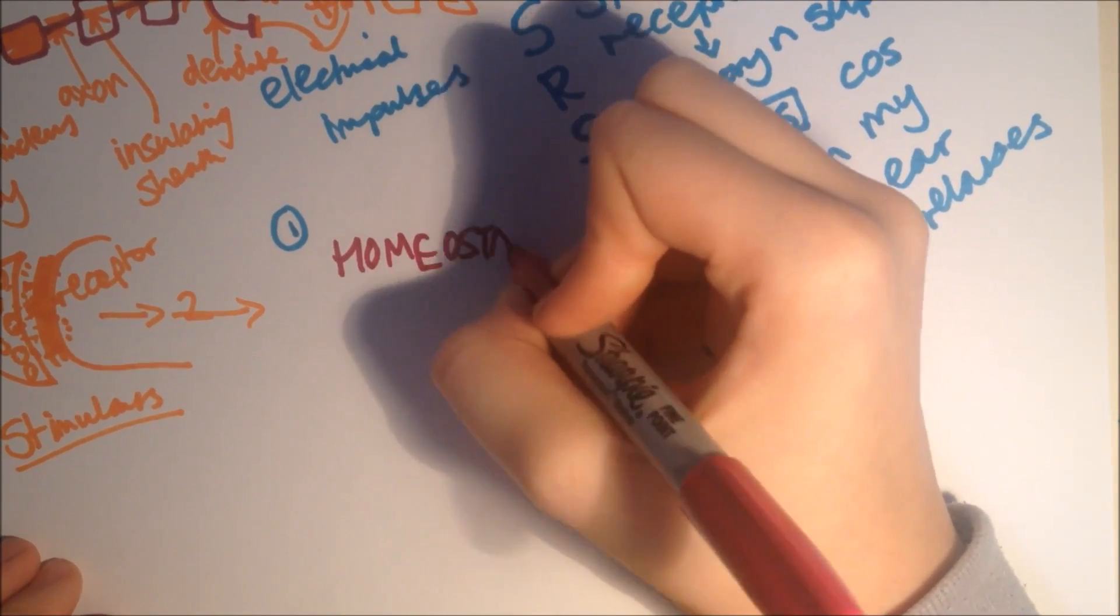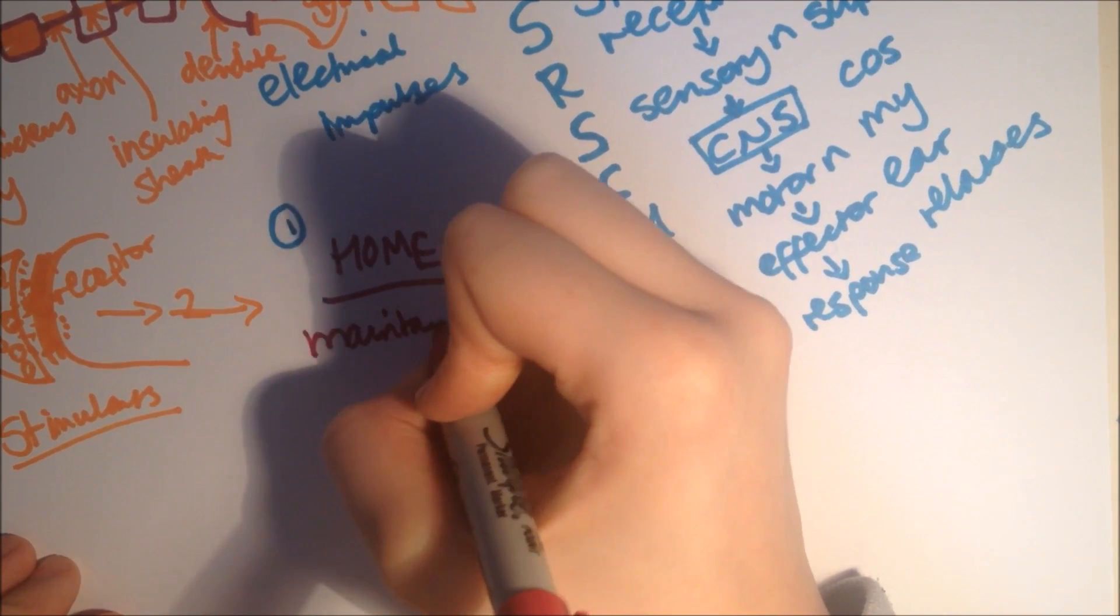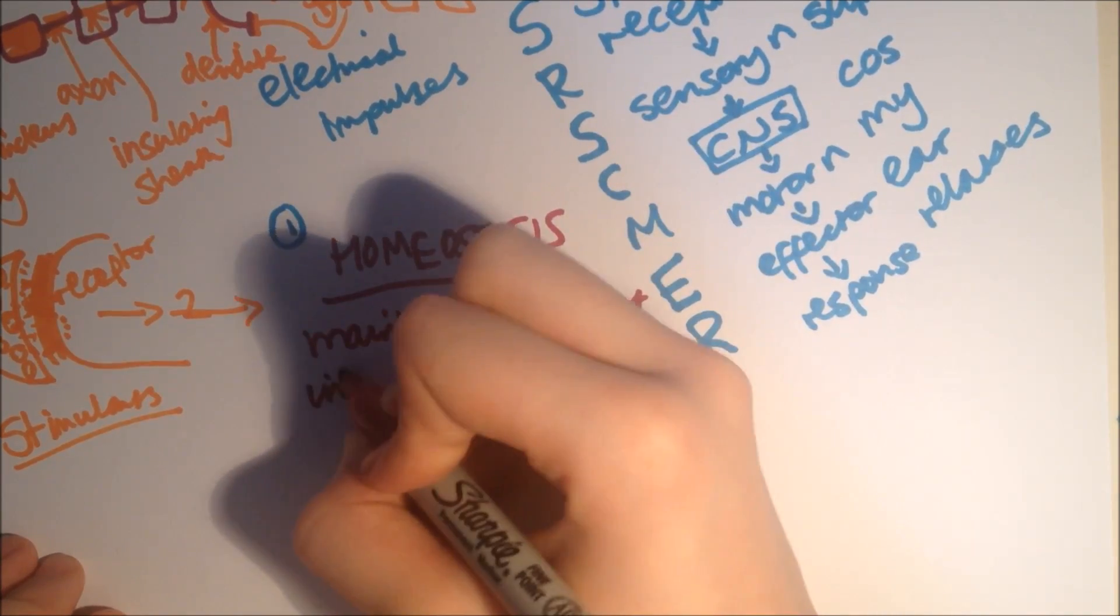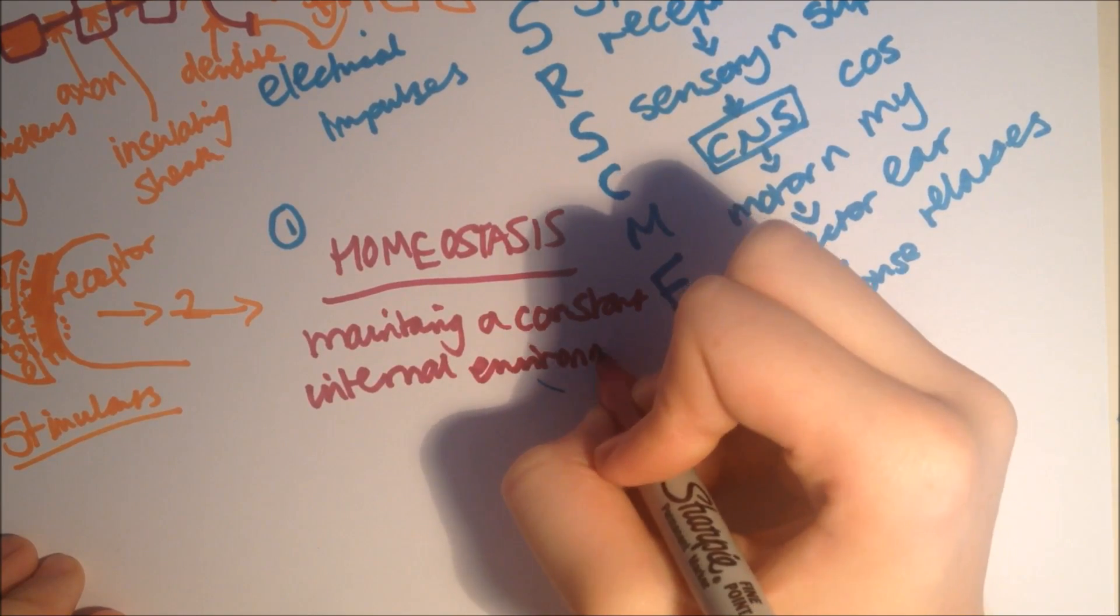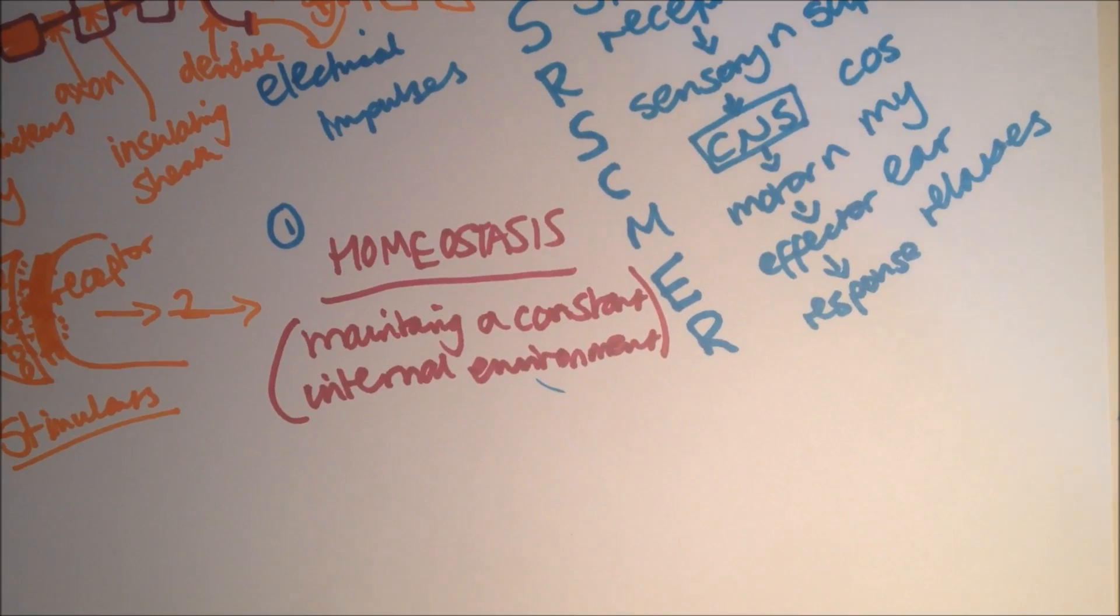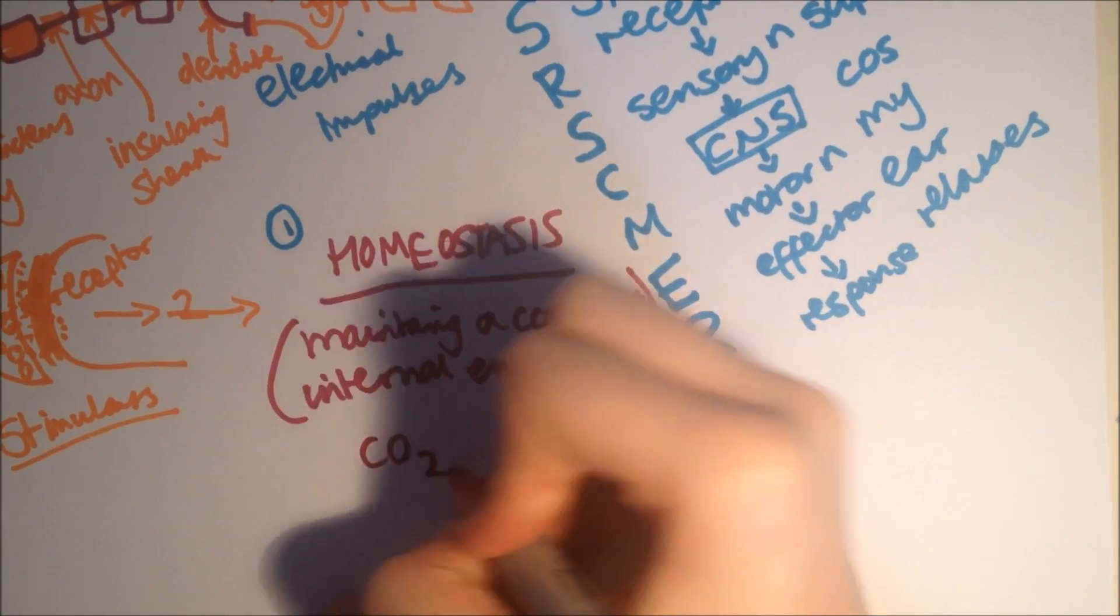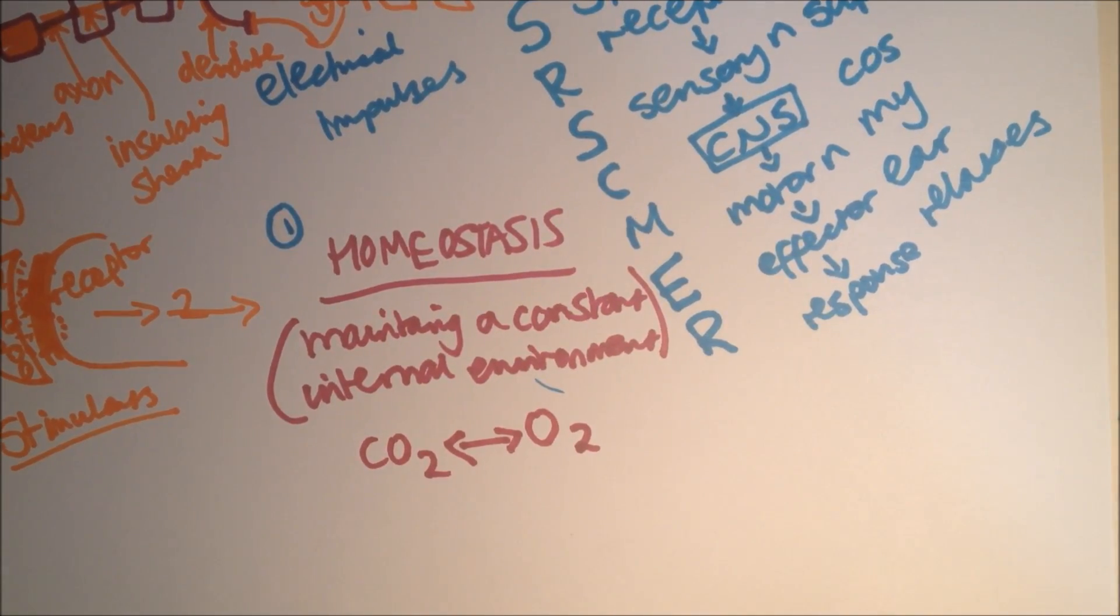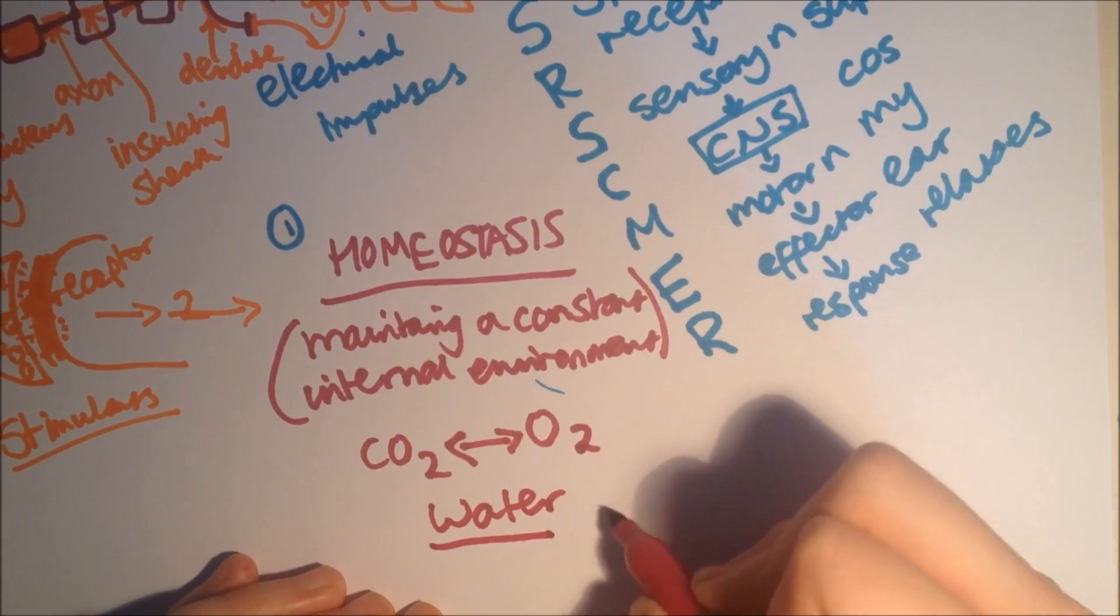So, now, we're going to move on to homeostasis. It's nothing to do with the Simpsons or Homer. Sorry. Homeostasis, means, maintaining, a constant internal environment. This is because the conditions in your body need to be kept steady, so the cells can function properly. Which involves balancing inputs with the outputs. For example, levels of CO2 need to balance, with the levels of O2. And, you also need, to balance the water content in your body.